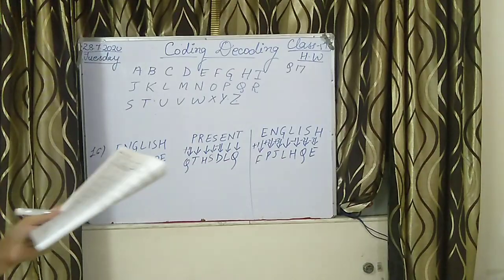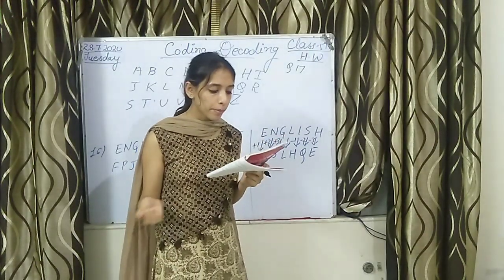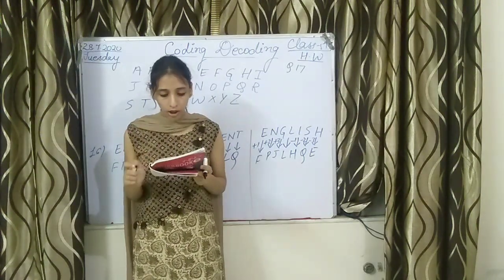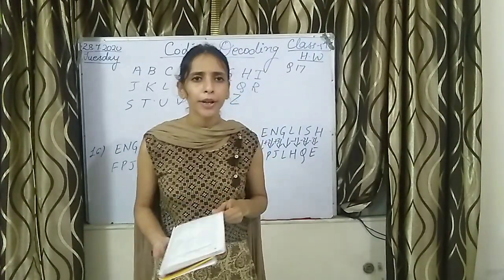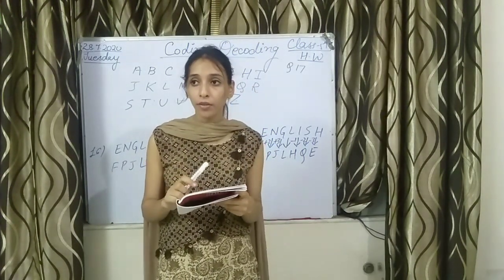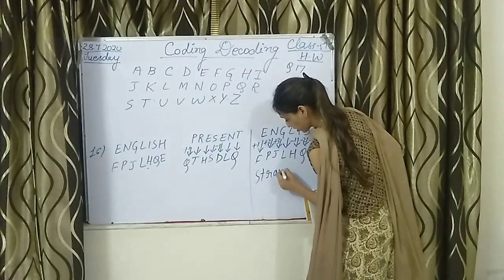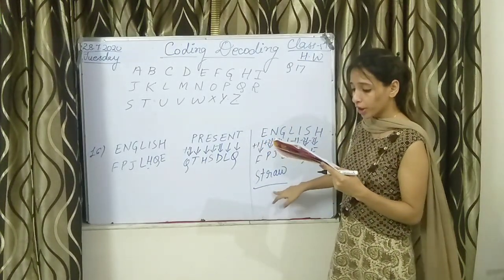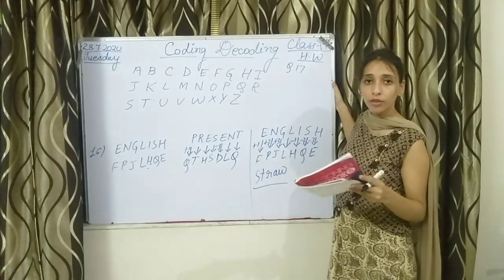Now the next question, question number 18: if paper means wood, wood means straw, straw means grass, grass means rubber, and rubber means cloth — then by which is furniture made? Furniture is made of wood, and wood means straw — so the answer will be straw.